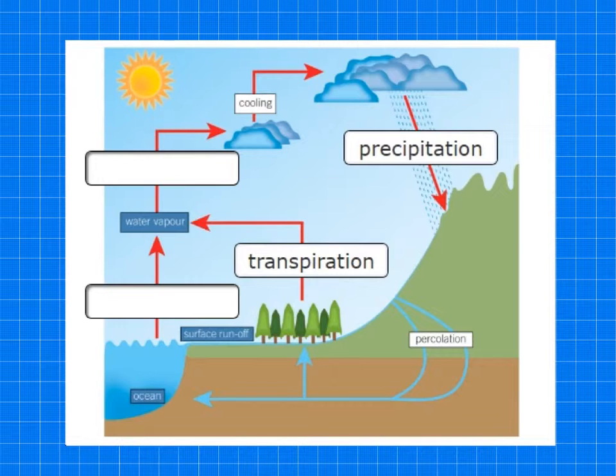So some of the water will be taken up by plants through their roots and they will use that in photosynthesis. But a lot of water will be released through the leaves, through the stomata, through the process of transpiration. And that will then mean the water will move into the atmosphere as water vapor.